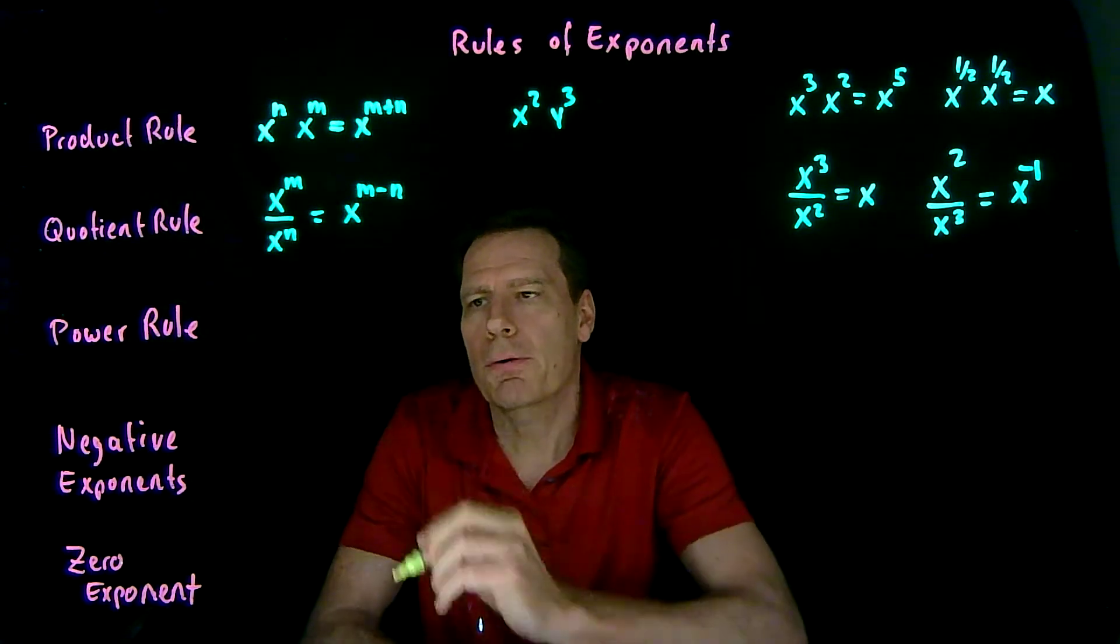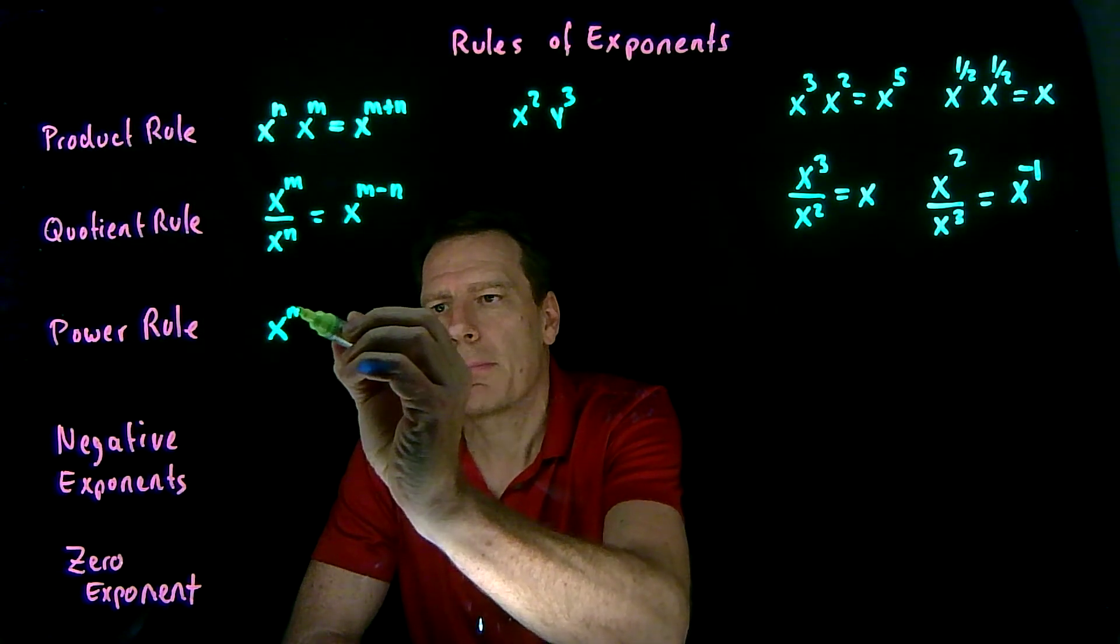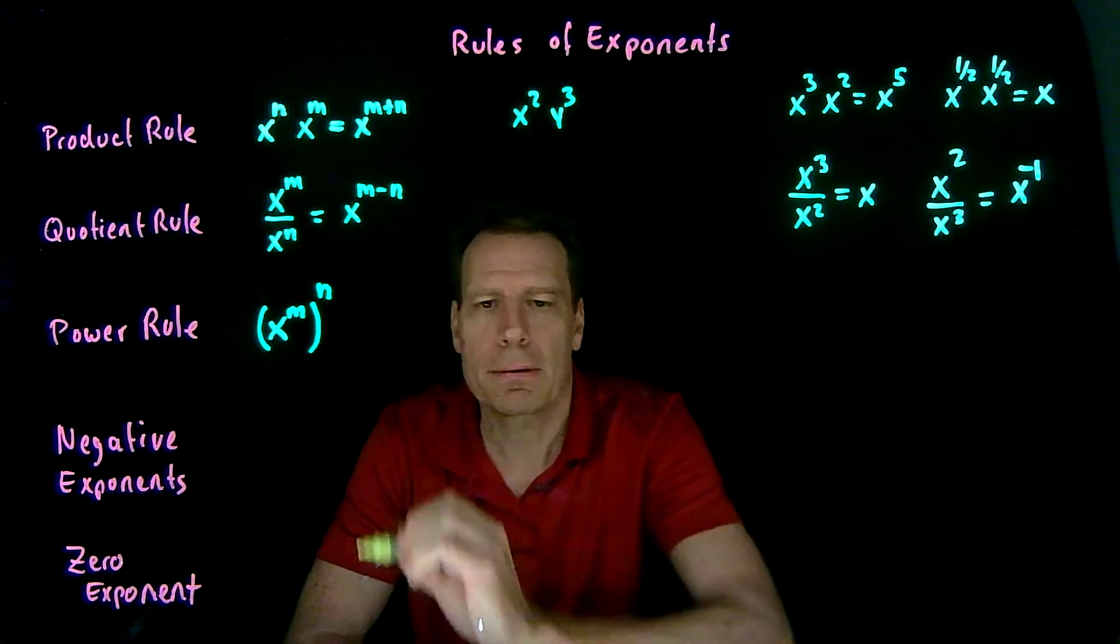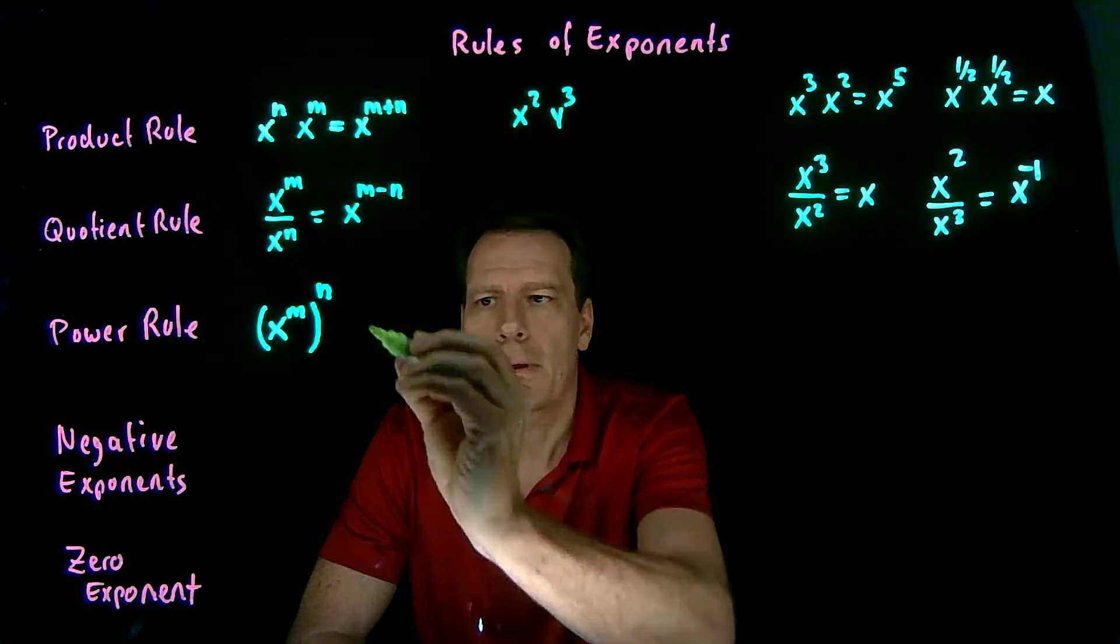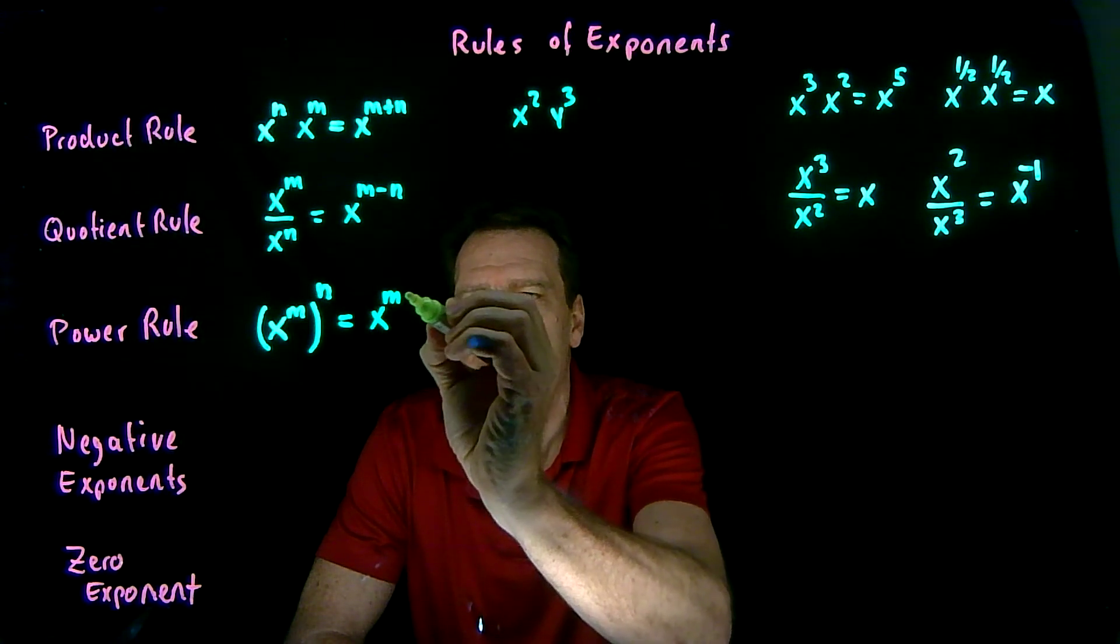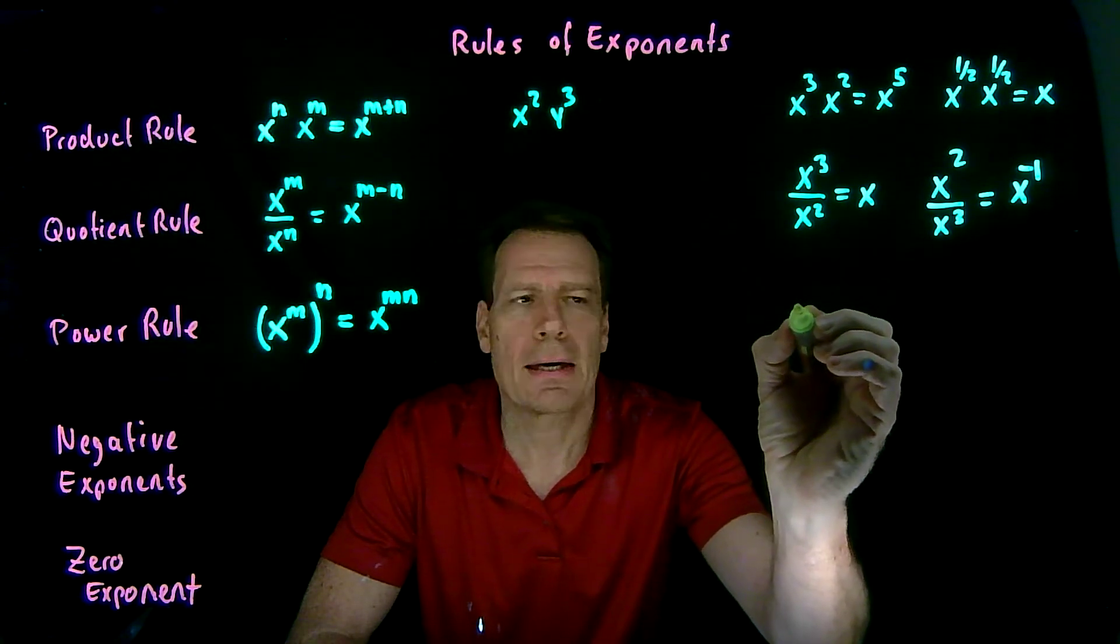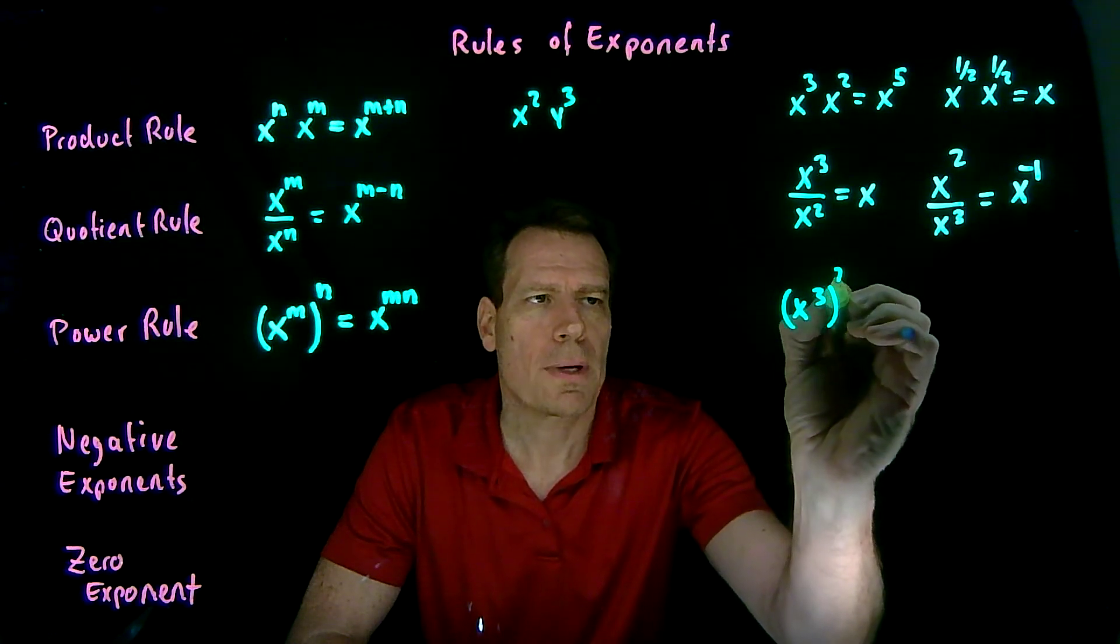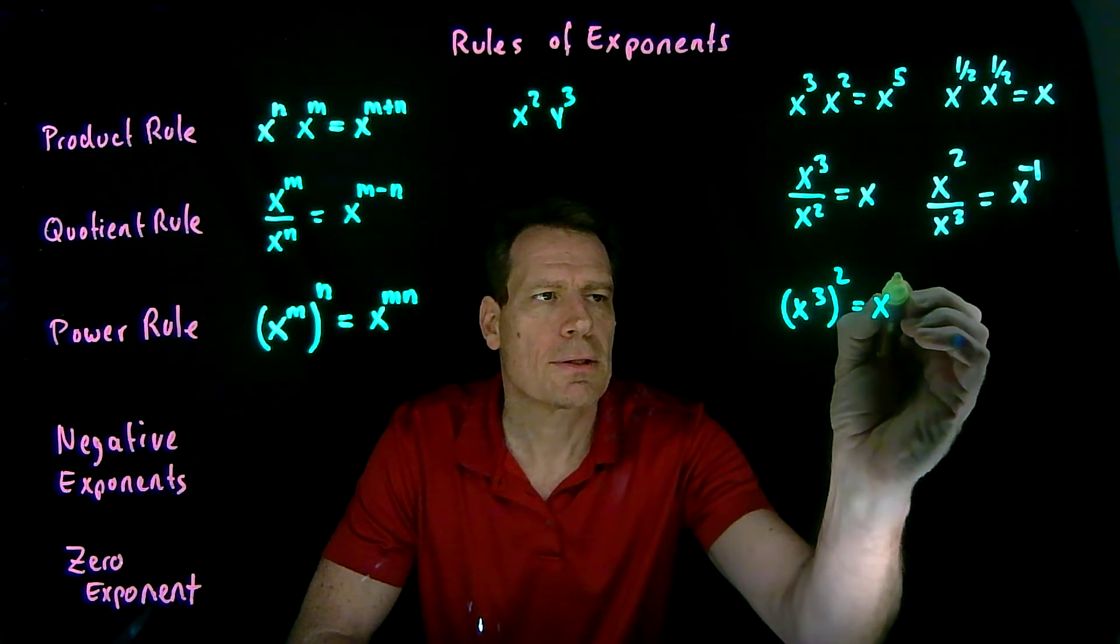Third, we have the power rule, which says if you have x to the m and you take the whole thing to another power, now you're going to multiply these exponents. So now you're going to get x to the m times n. So if we have x to the third squared, then that would become 2 times 3, x to the sixth.